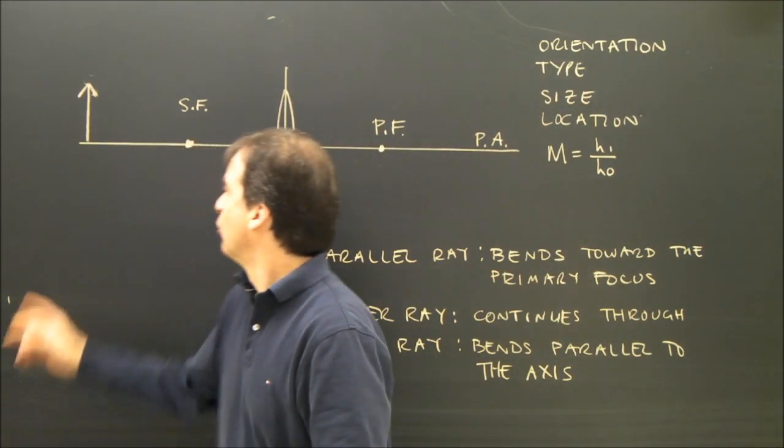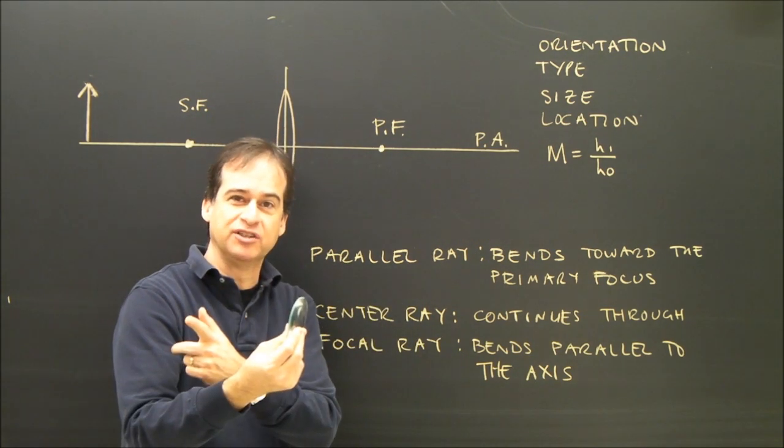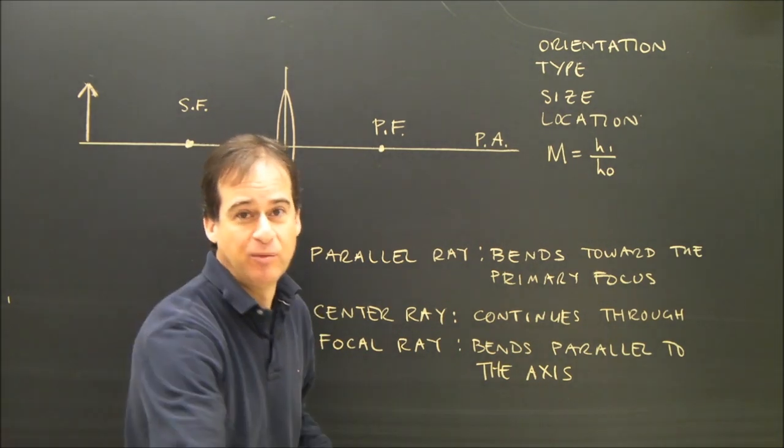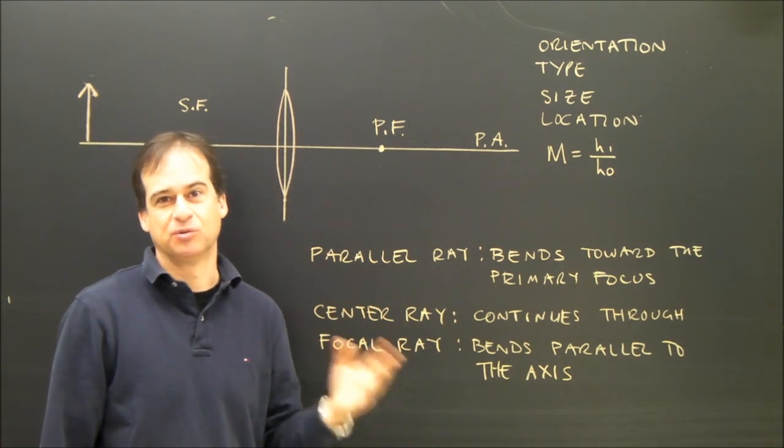We use ray diagrams to locate an image. If you want to know what this lens is doing, if I put an object in a certain place, where will the image be and what kind of image will I get? The way we do that is with something called a ray diagram. You can also do it by calculation, so we're going to do both. First we'll do the ray diagram.